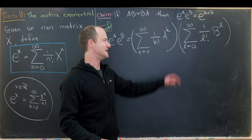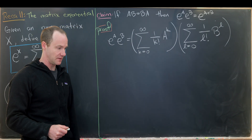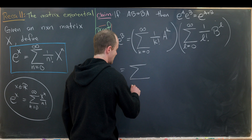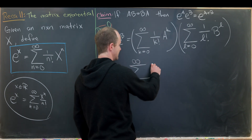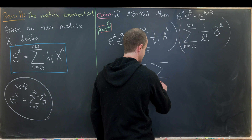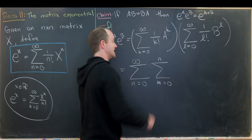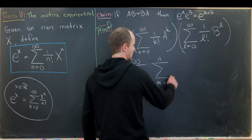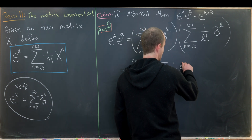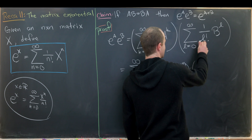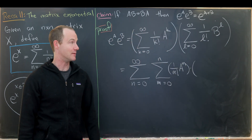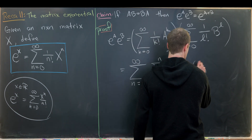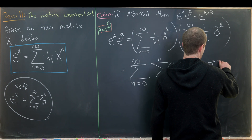Now we need to multiply these two infinite series, and we'll do that with the Cauchy product formula for infinite series. That gives us the sum as n goes from zero to infinity, and inside of that the sum as m goes from zero to n, of the nth term: one over m factorial times A to the m, multiplied by the n minus m term of the other sum: one over (n minus m) factorial times B to the n minus m.